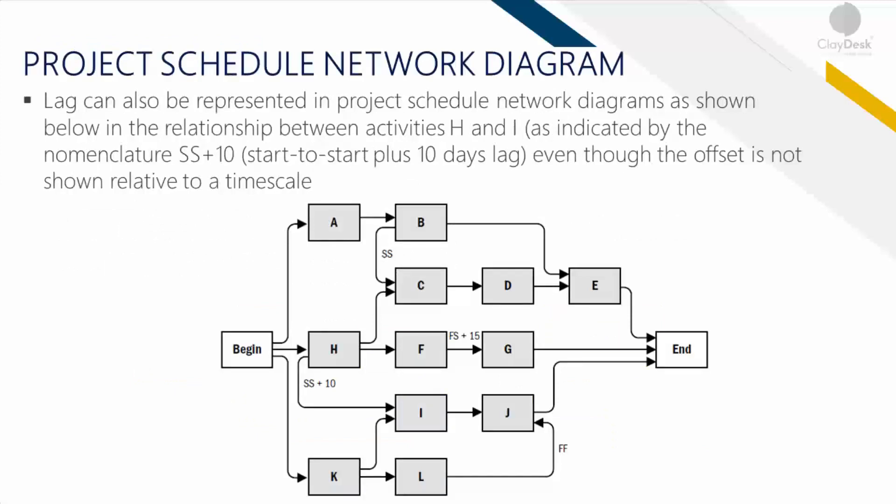Here's the project schedule network diagram — lags can also be represented in it. For example, the relationship between activities H and I is indicated as SS plus 10 days lag, even though the offset is not shown relative to the timescale. Based on your own project requirements, you can schedule and adjust accordingly. That's an important role of the project manager: using the right tool, understanding it, and then managing the project.